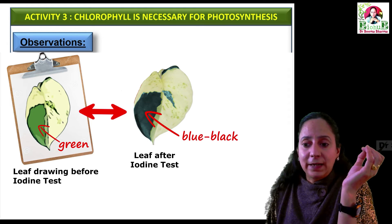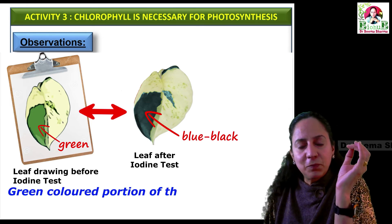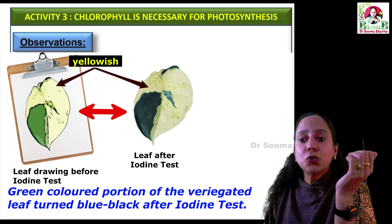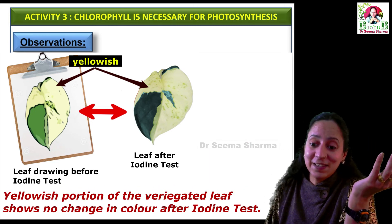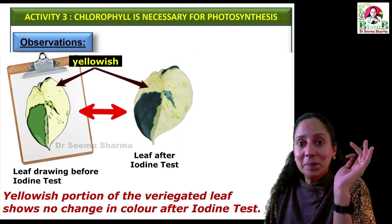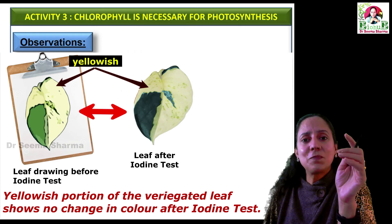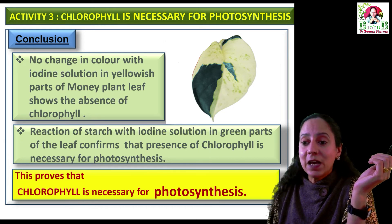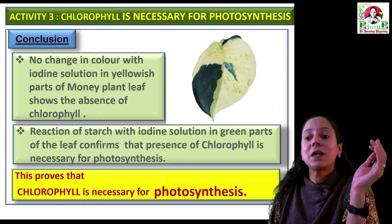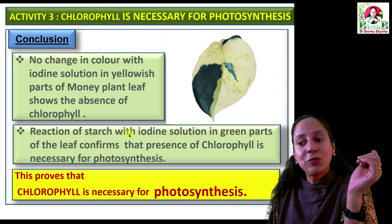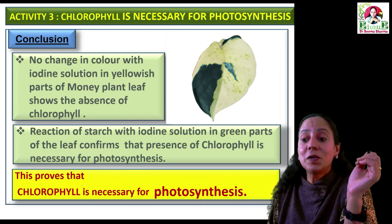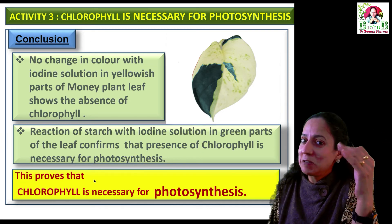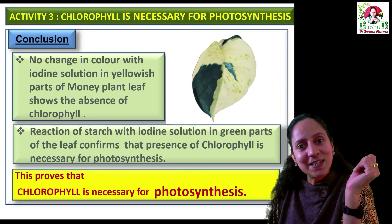Which part of the leaf turned blue-black? The green-colored portion of the variegated leaf turned blue-black in color. On the other hand, the yellowish portion did not show the presence of starch because that part is non-chlorophyll-containing, or chlorophyll is almost absent. From these observations we can clearly conclude that no change in color with iodine solution in the yellow parts shows absence of chlorophyll, and the reaction of starch with iodine solution in the green parts confirms that presence of chlorophyll is necessary for photosynthesis. With this activity you can prove that chlorophyll is necessary for photosynthesis.